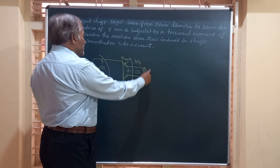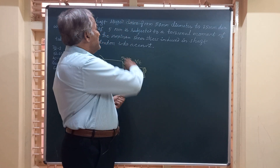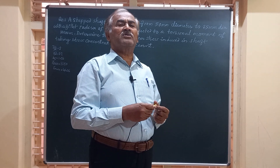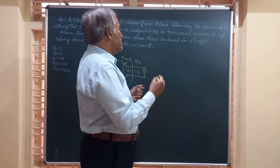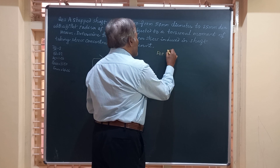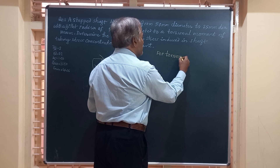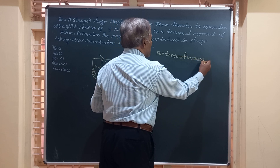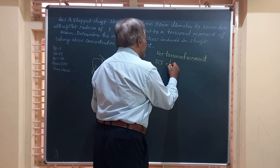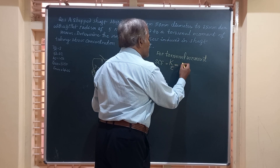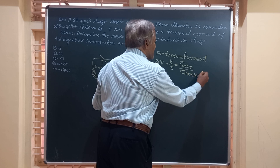First of all, we have to refer to the chapter on stress concentration and find a graph for a member subjected to twisting moment. For all stress concentration problems, we start by finding K_tau, the stress concentration factor for torsional moment. K_tau is equal to the ratio of the maximum shear stress to the nominal shear stress.